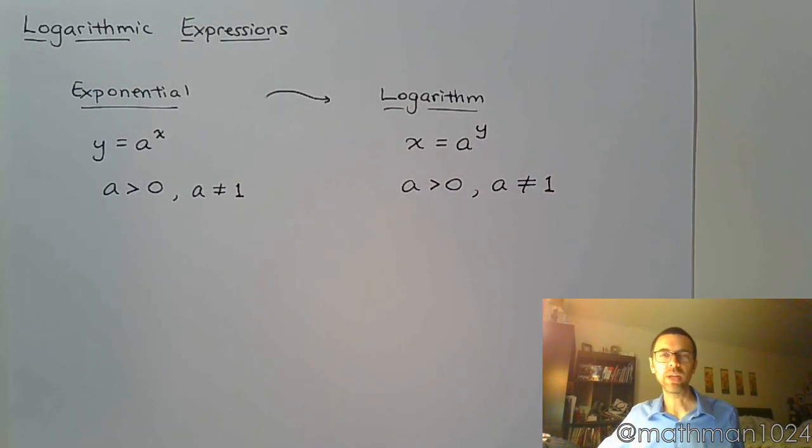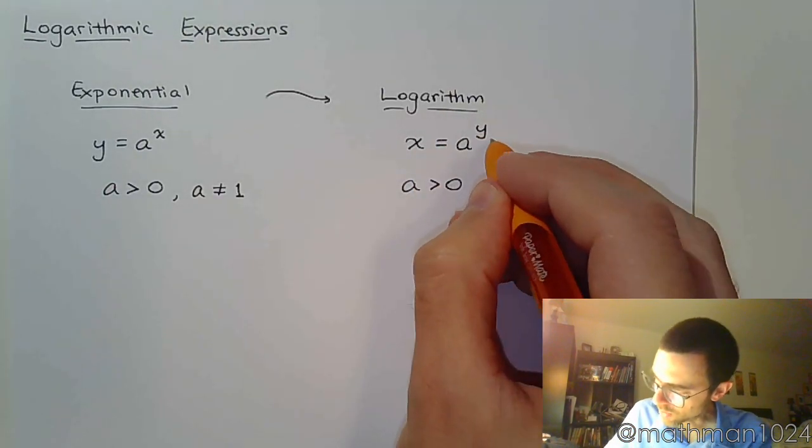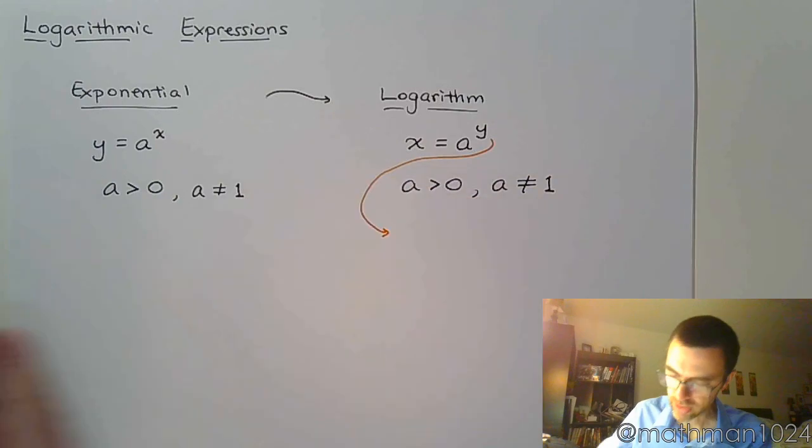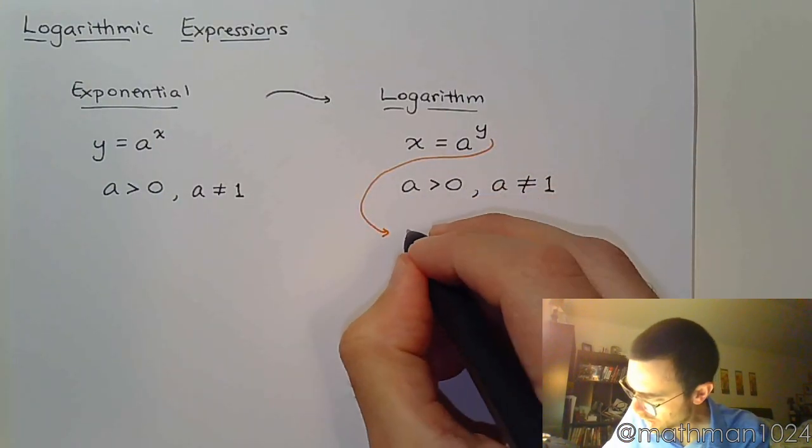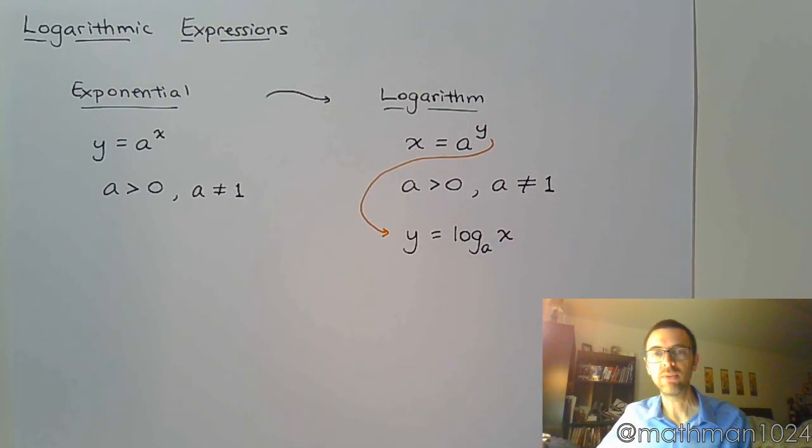Now the problem that we have here is that x equals a to the y, that's just kind of weird. So we kind of rewrite this to be from the perspective of y. That way we can then go to function notation later. And so what we do is we rewrite this and we say that y equals log base a of x.